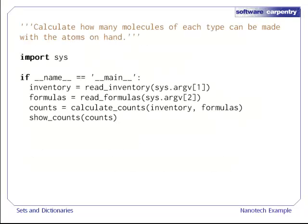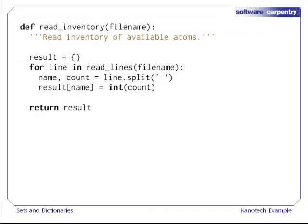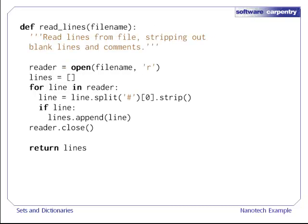The main body of the program is simple. Read in the input files, do our calculation, and print the result. Reading the inventory file is also simple. Take each interesting line in the file, split it to get an atomic symbol and a count, and store them together in a dictionary. For clarity's sake, we'll use this helper function to read a file and strip out blank lines and comments.